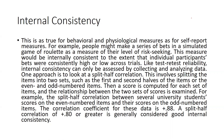The split-half method involves splitting the items into two halves. Because difficulty level increases from the first to the last question, we can divide odd-numbered questions into one category and even-numbered questions into another. So question one, three, five, seven fall into one category, while question two, four, six, eight and so on fall into another category. We then check the correlation between both sets of questions. The correlation coefficient should be 0.80 or greater — a split-half correlation of 0.80 or greater is generally considered good internal consistency.